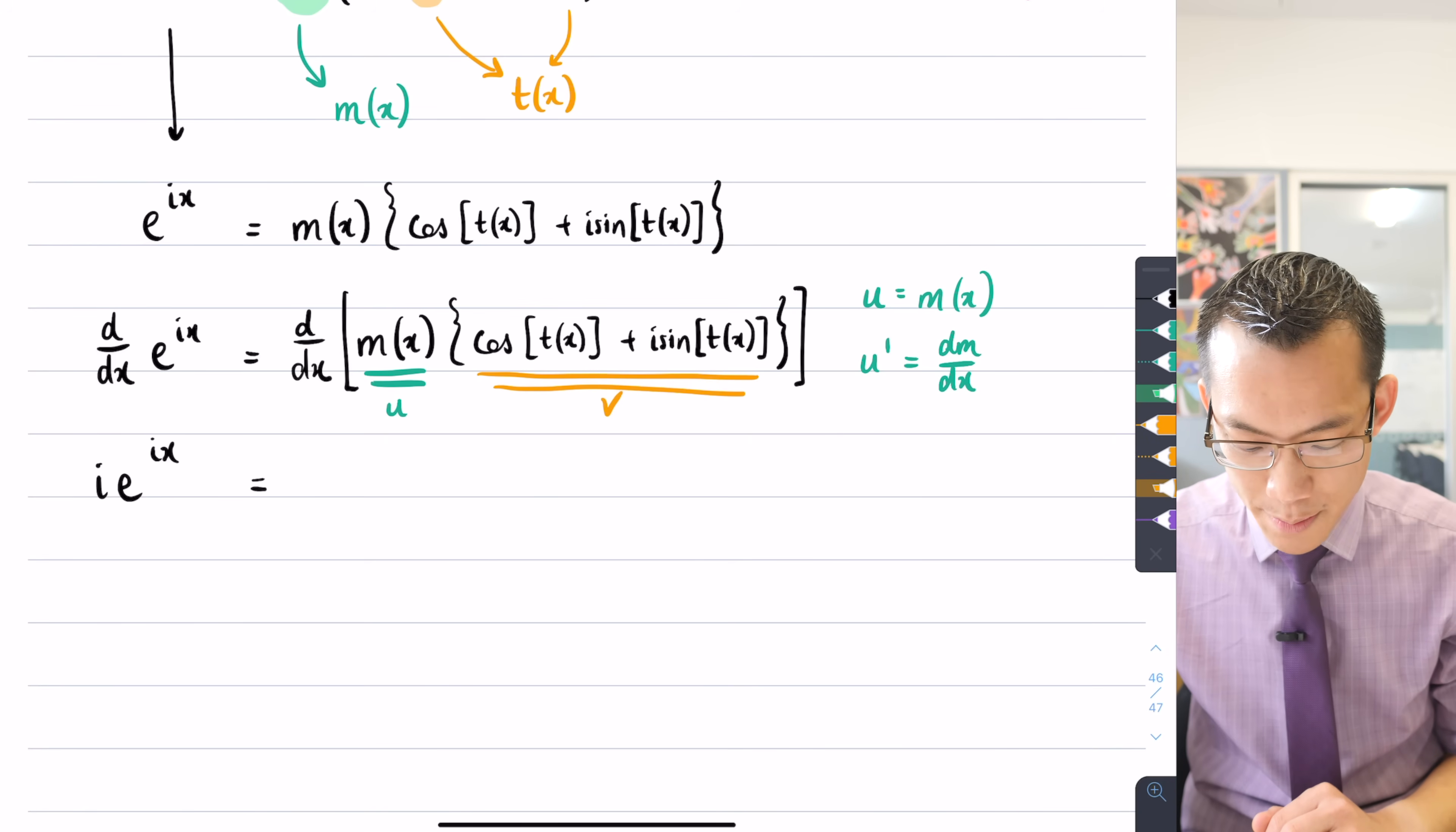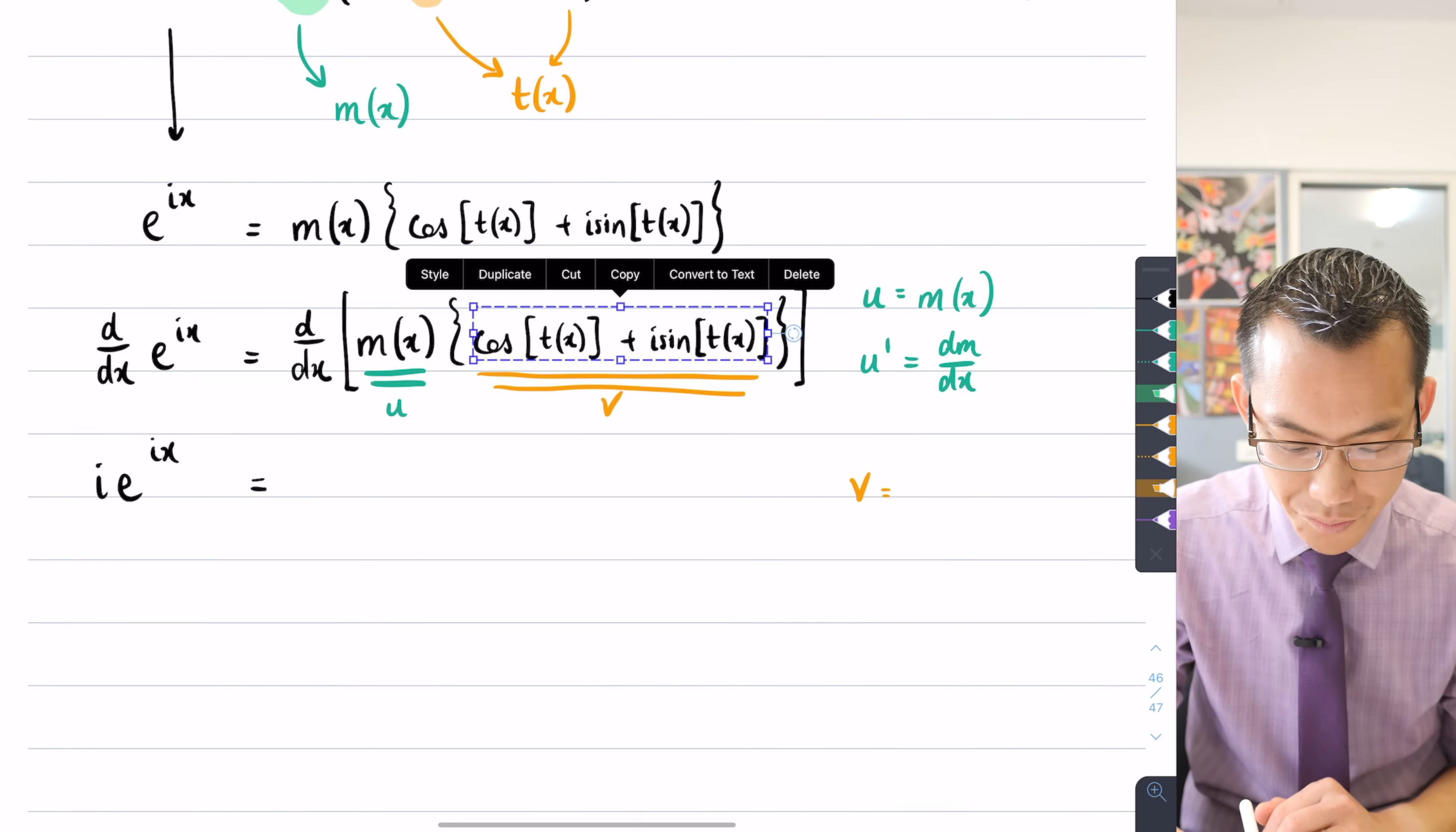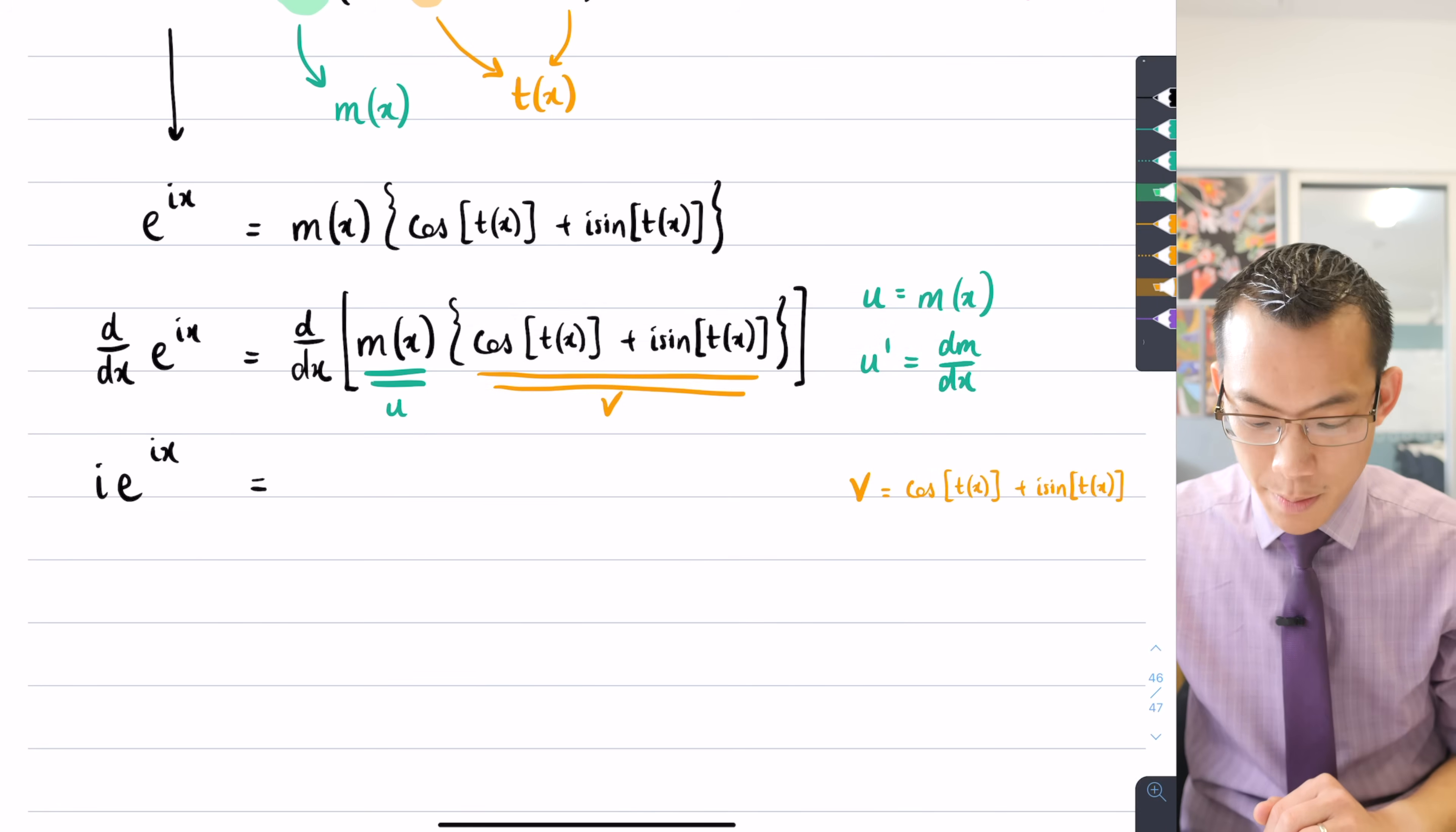Now, what do we have next? Well, I'm defining v as this mess here. So I'm going to write that as, I'm just going to duplicate it over here. Am I going to have enough space? I have a feeling I'm going to have to make it smaller. That'll just fit. So there's my v.